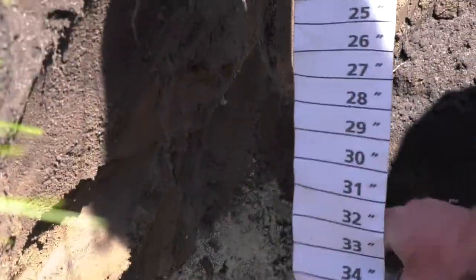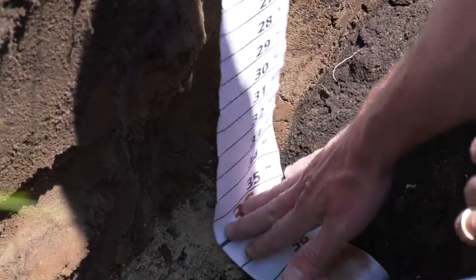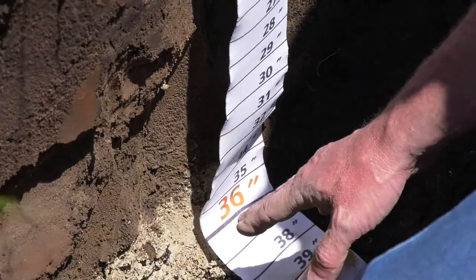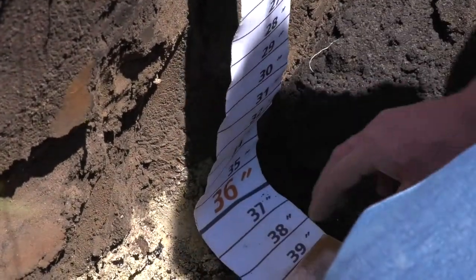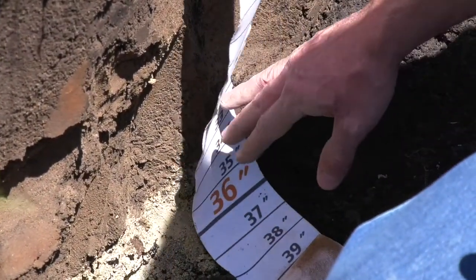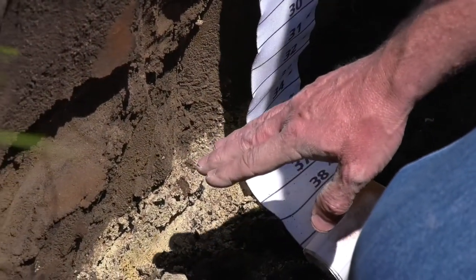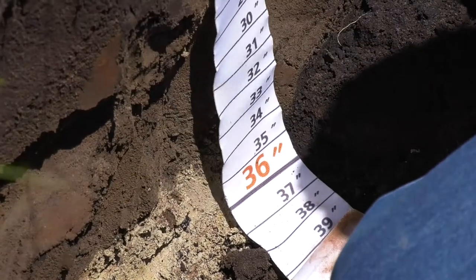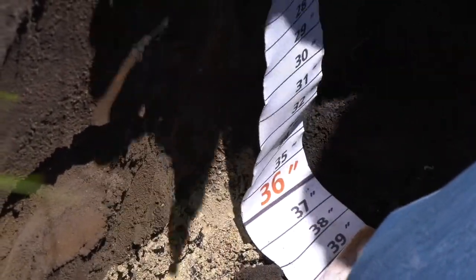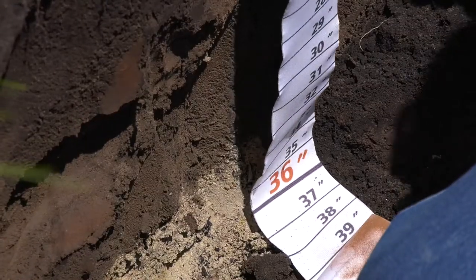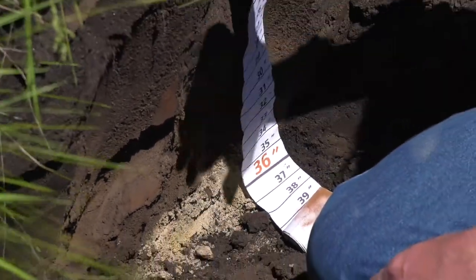Now in this case, you can see with this tape that I have here, we have saturated soil conditions at some point in the year at 36 inches below grade. So as a septic designer and a septic inspector, we would note that 36 inches is the depth to restriction. And since we need 36 inches of vertical separation between a restriction and the bottom of the system, that tells us where we can put this system.